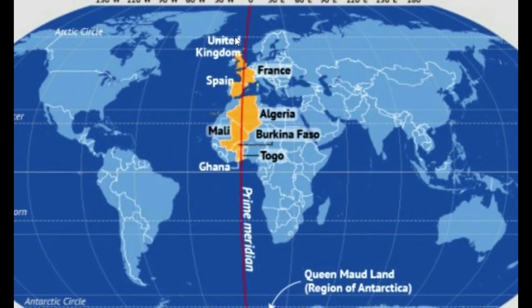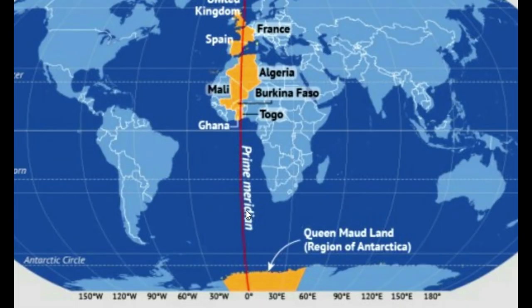There is another map to make things more clear. The countries are UK, France, Spain, Algeria, Burkina Faso, Mali, Togo, and Ghana. If we also talk about the Antarctica region, there is a presence there as well.